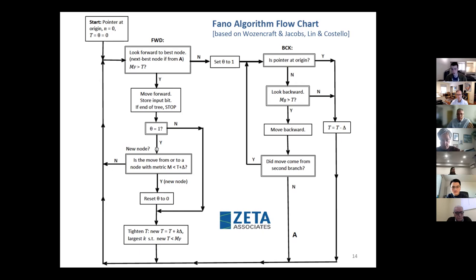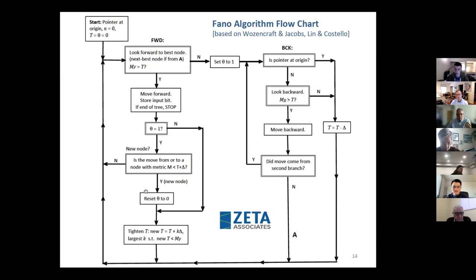There's a part of the flowchart about whether you've visited a node before — that's the magic Fano figured out. Some books say 'did you visit this node before?' without telling you how you know. This is how you tell. Eventually when the cumulative metric is not greater than the threshold, if you're at the origin you're stuck and you decrease the threshold. Otherwise you look backward — you couldn't go forward, so you look backward.